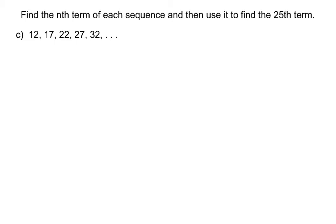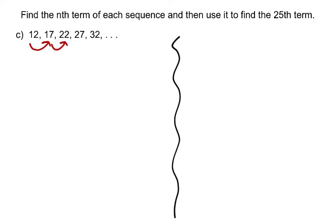Part c. Our sequence is 12, 17, 22, 27, and 32. The pattern: going from 12 to 17, 17 to 22, and so on — we're adding 5 repetitively. That's what makes the sequence arithmetic, and it tells us our common difference d is 5.